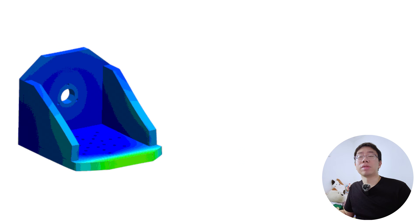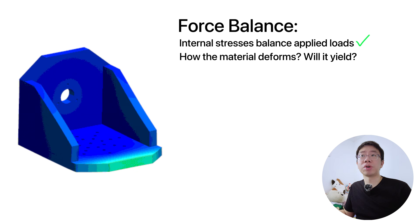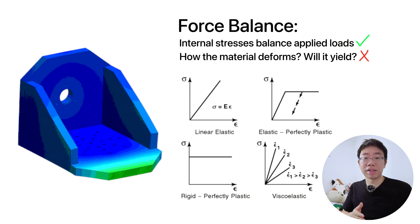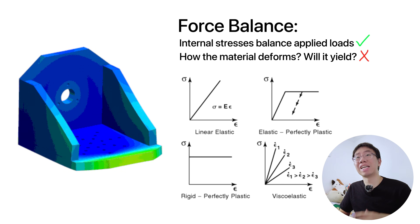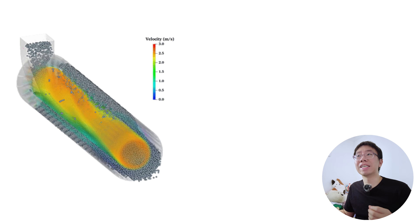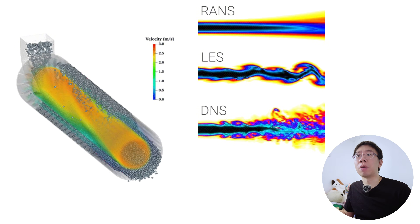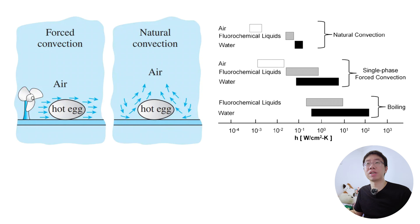For example, consider a metal bracket carrying load. The force balance tells us the internal stresses must support the applied load, but it does not tell us how much the bracket will deform or whether it will yield. That depends on whether you model the material as linearly elastic, elastic-plastic, or viscoelastic. Two engineers can write the same force balance and reach different conclusions because they chose different constitutive models. The same thing happens in fluids — a momentum balance applies to both laminar and turbulent flow, but the predicted pressure drop depends entirely on how viscosity and turbulence are modeled. In heat transfer, the energy balance is the same whether cooling is natural or forced convection, but the heat transfer coefficient determines the actual temperature rise. Understanding constitutive behavior lets you choose the right level of fidelity — when linear elasticity is sufficient, when plastic deformation must be considered, when flow must be treated as laminar, and when turbulence dominates.